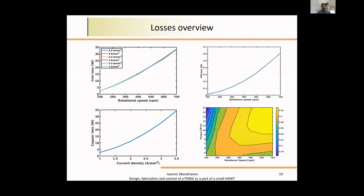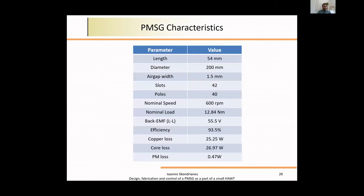This is a small overview of the losses of the machine, which we were totally expecting. As the rotational speed increases, the iron loss increases at the top left picture of the slide. As the current density increases—which depicts the load of the machine—the copper loss increases because current increases. At the bottom right picture, we can see the efficiency map of the generator, which was really good according to our supervisors. In this slide, we have an overview of the machine characteristics. The nominal torque was 12.884 Nm. The back EMF was 55.5 volts, less than the 60 volts requested by the competition. Efficiency at rated values was 93.5%.